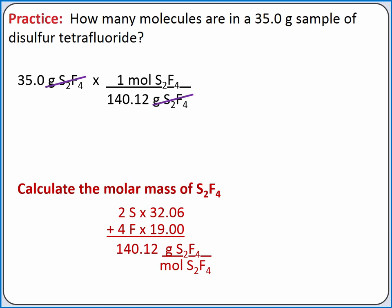Then we can convert between moles of S2F4 and molecules using Avogadro's number. There are 6.022 times 10 to the 23rd molecules of S2F4 in 1 mole of S2F4. We put the 1 mole on the bottom, so it cancels out our previous moles of S2F4.